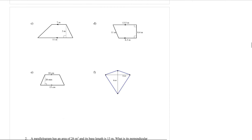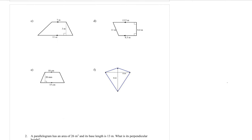Question c: you can see the parallel sides here, so this one is actually a trapezium. The a and the b are the two parallel sides — it doesn't matter which way around you label them — and h is the perpendicular height that goes between them. The formula for a trapezium is h over 2, bracket a plus b.